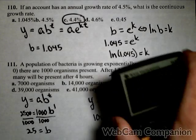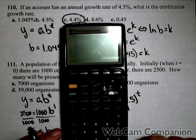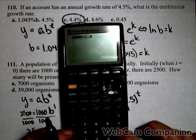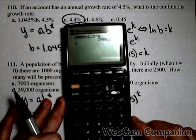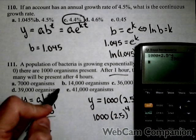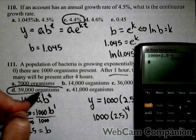And now we can bring out our calculator, and we have 1,000 times 2.5 to the fourth, and we get about 39,000 bacteria will be present after four hours.